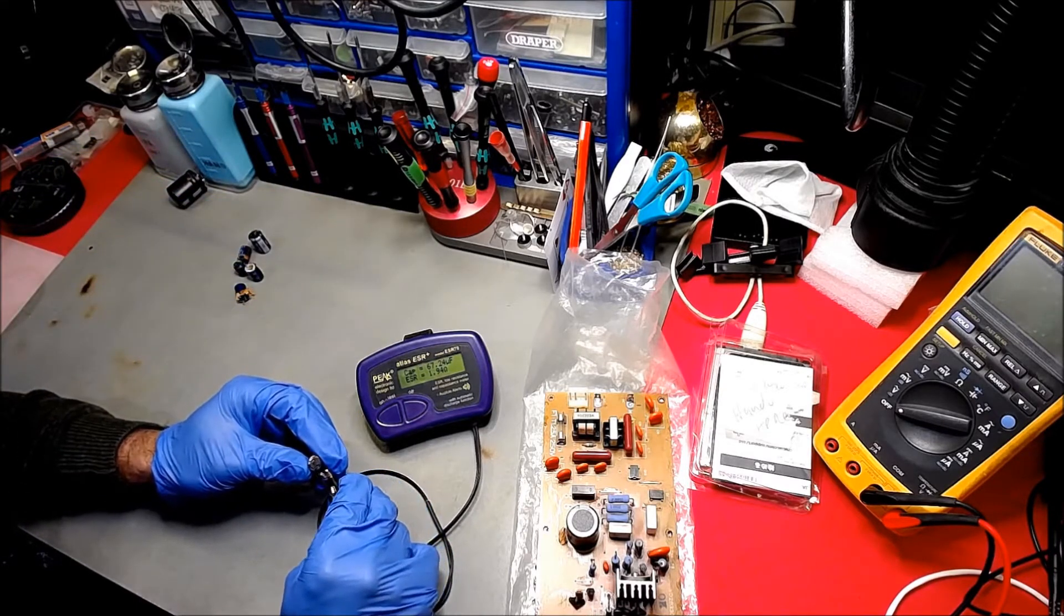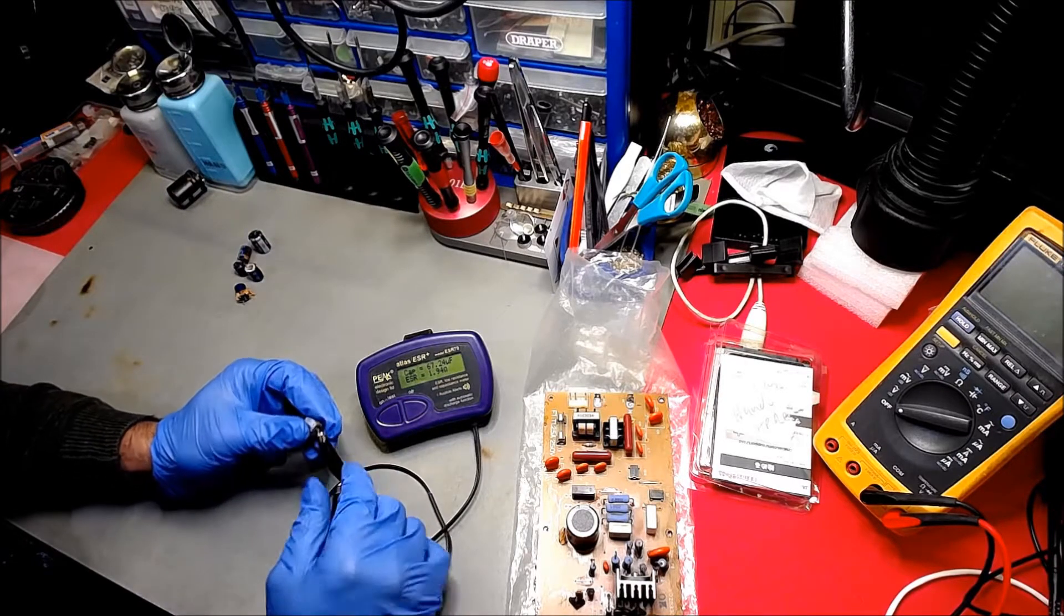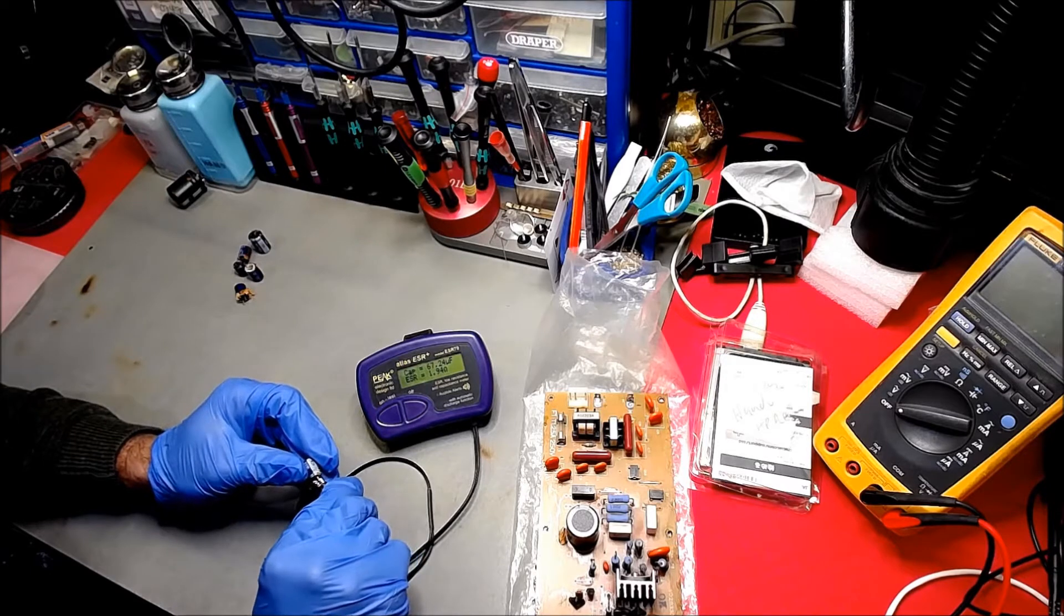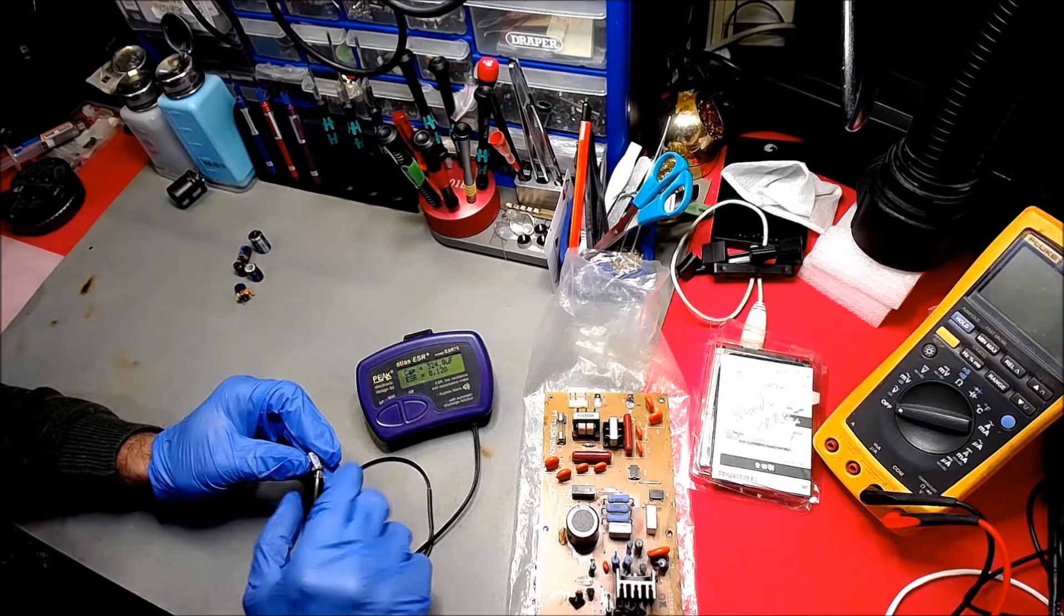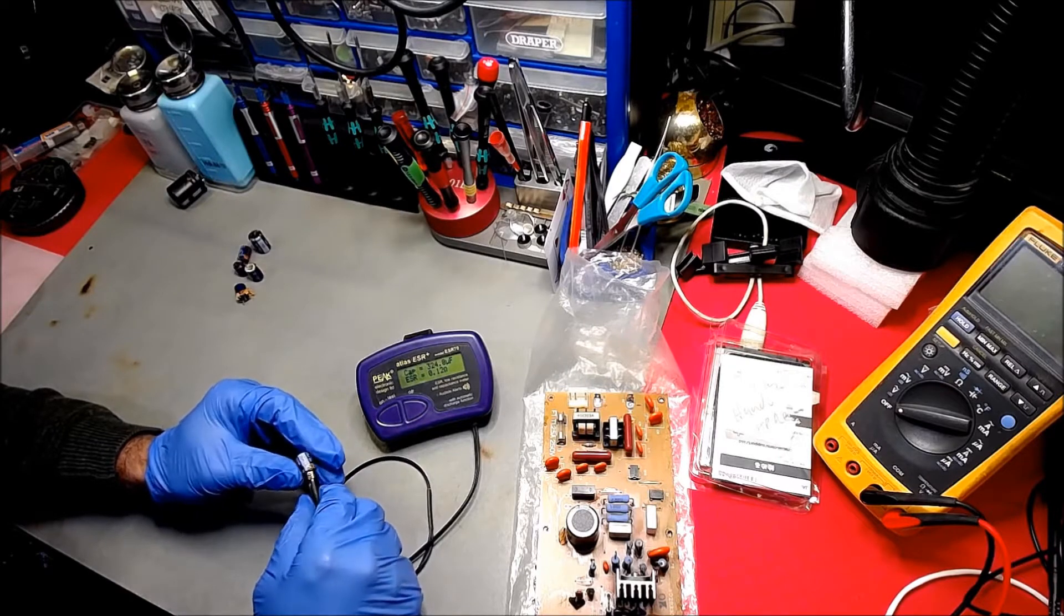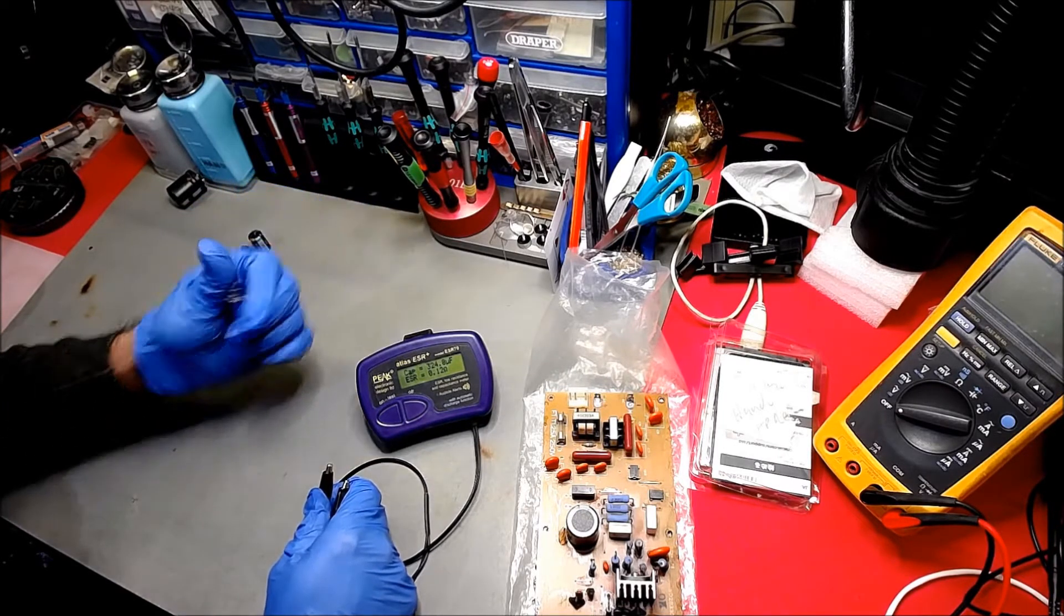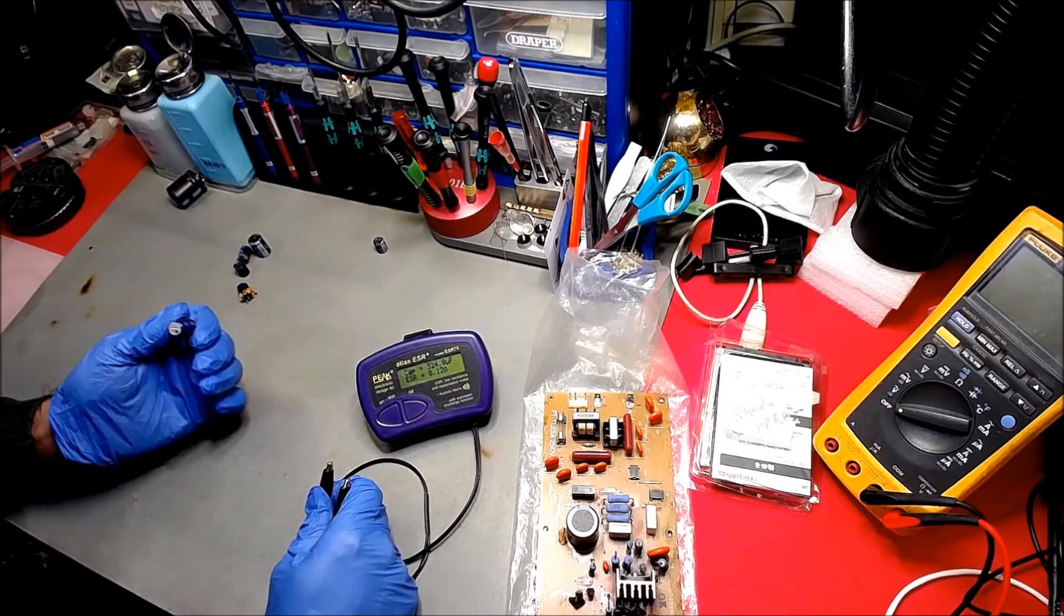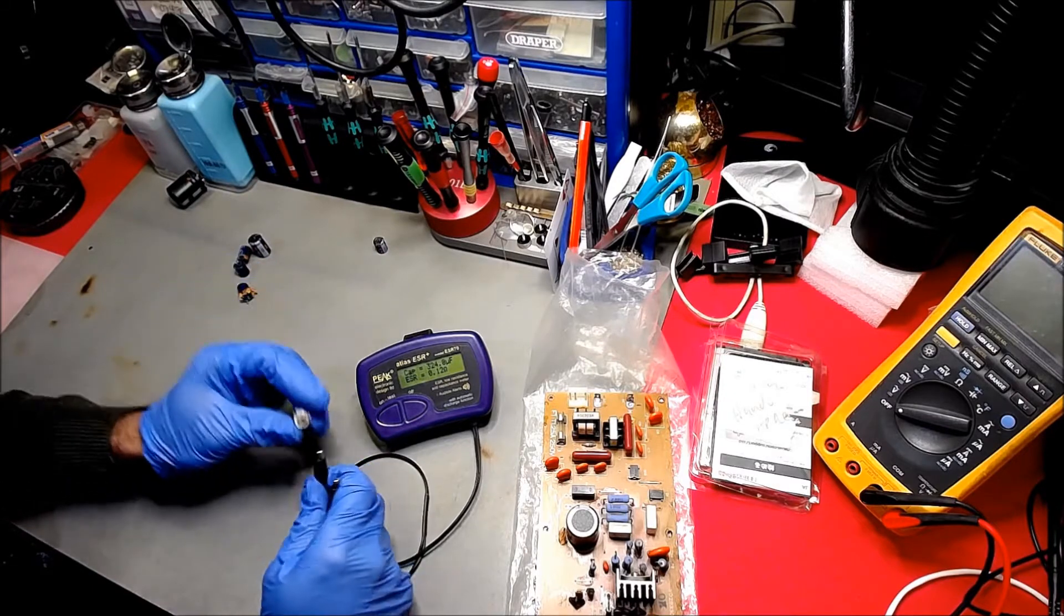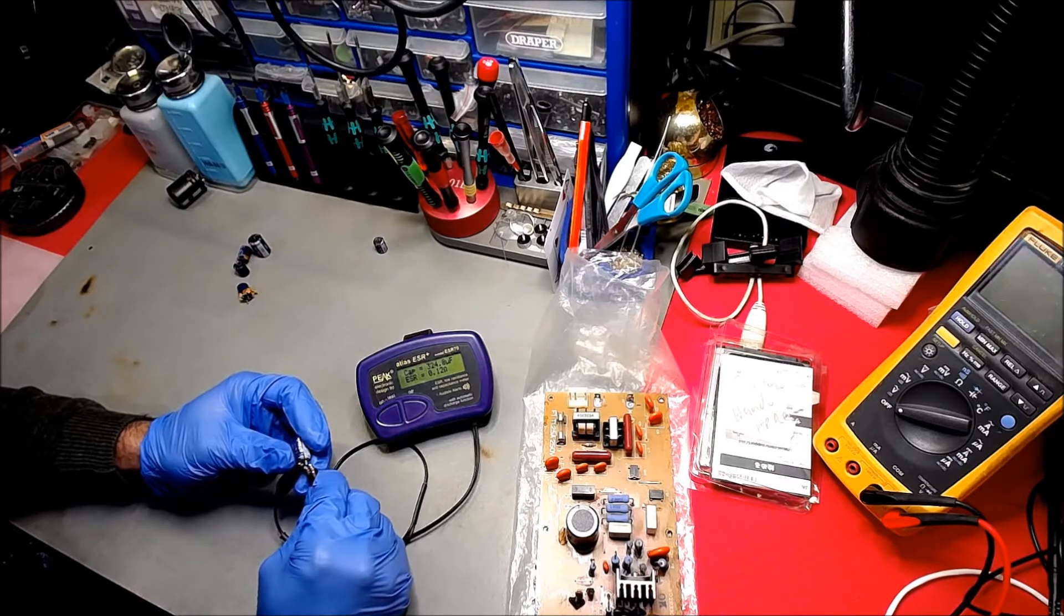This is a 330 microfarad 25 volt, let's check this. Okay, so that's still not bad. Now remember, some might be good, but some have started leaking, like for example this one. This should be 100% a duff capacitor.